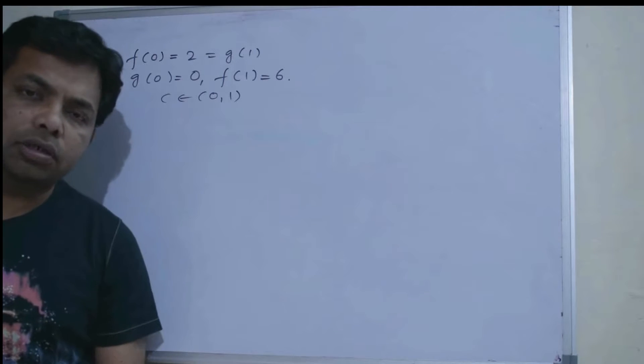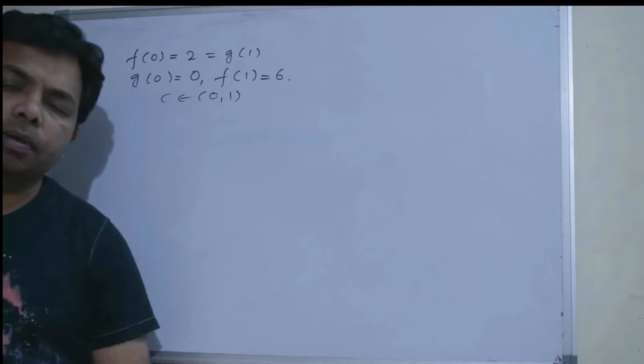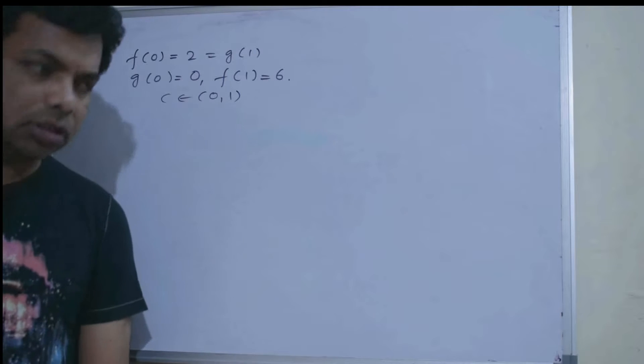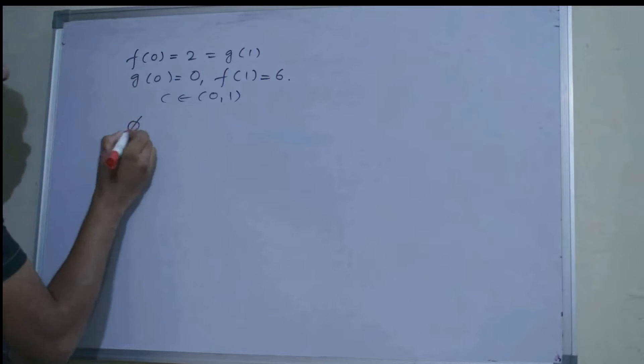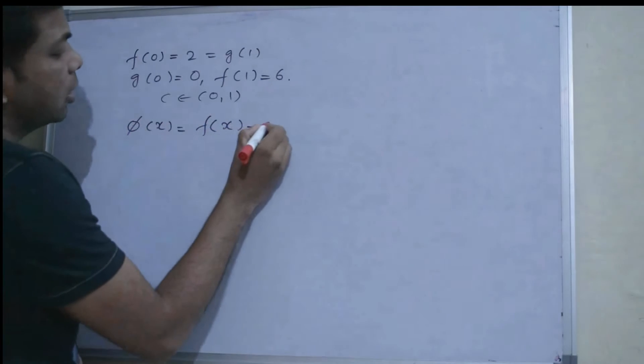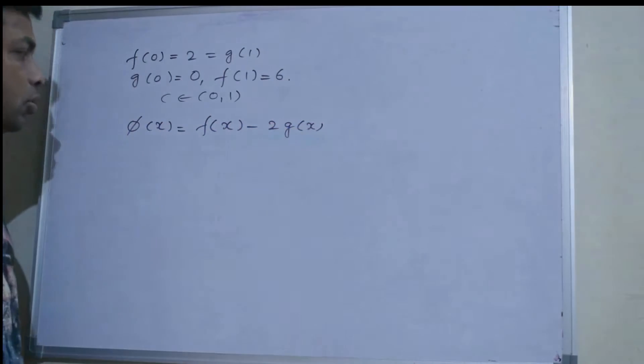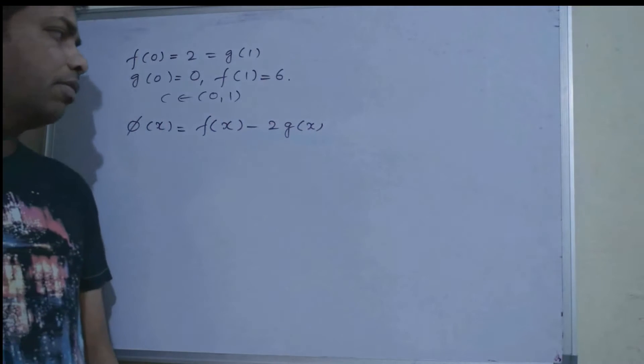So now how to do this problem. The given values are: f(0) = 2 = g(1), g(0) = 0, and f(1) = 6, and we are asked about c in (0, 1). First of all, you have to define a function — you have to guess a function using the options. The function we are going to define now: I will define φ(x) = f(x) - 2g(x).